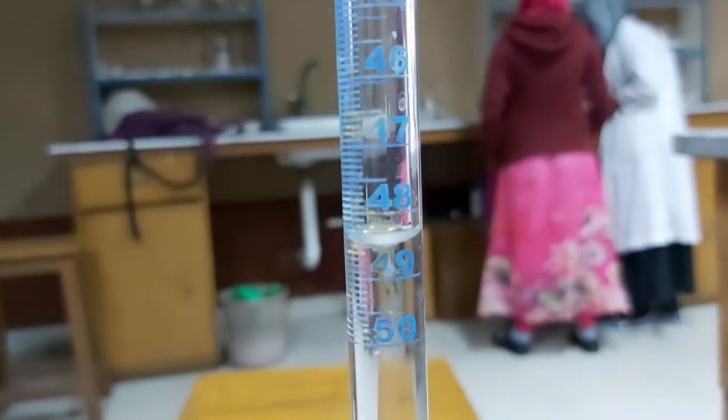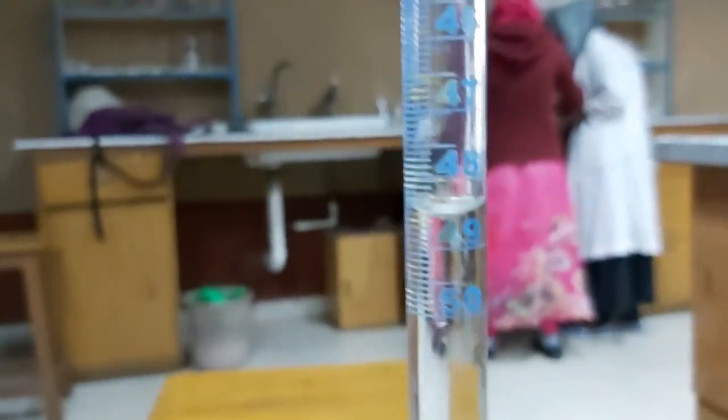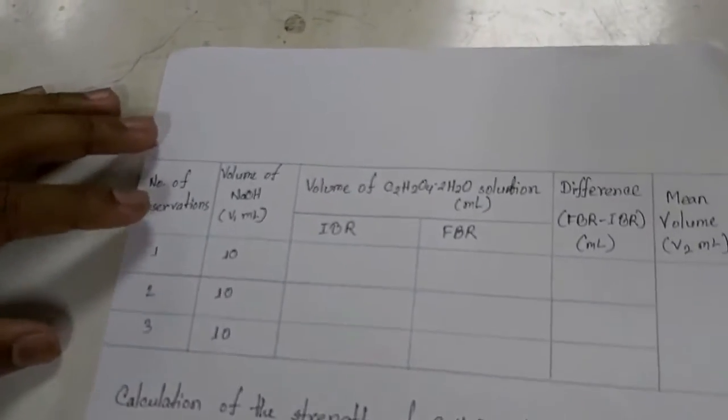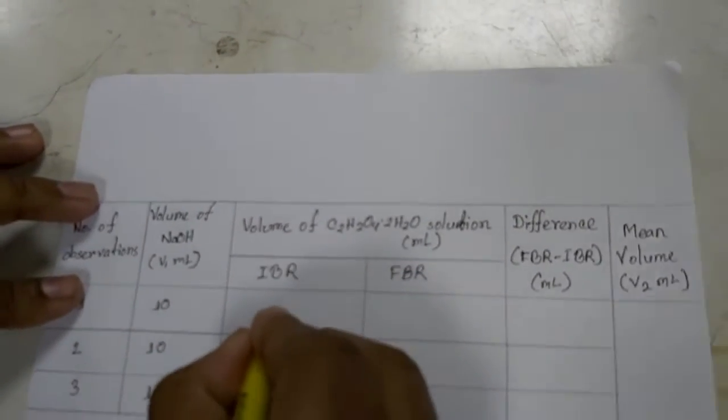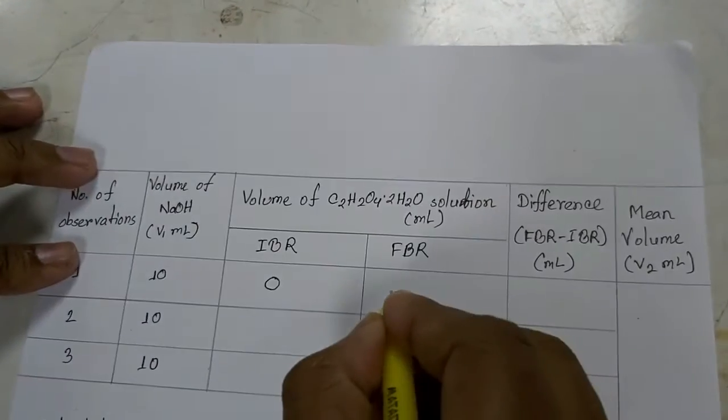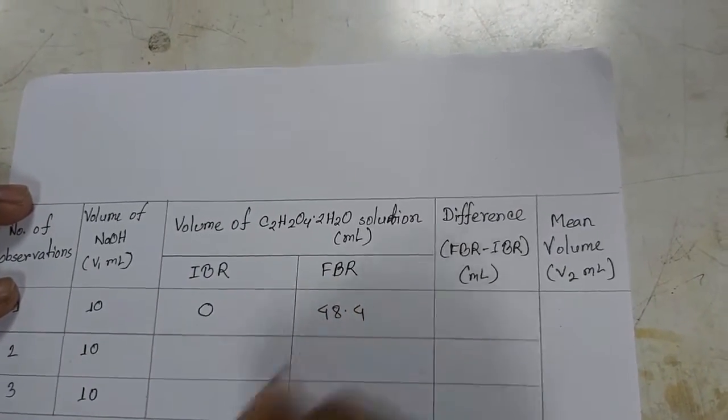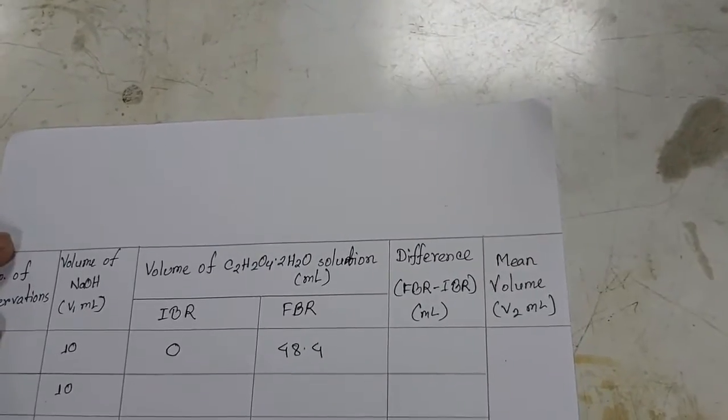The reading is about 48.3 or something. This is the endpoint of this titration. Now for the calculation, we have to write the initial burette reading was 0 and the final burette reading was 48.4, and the difference is 48.4.